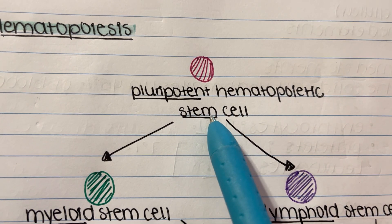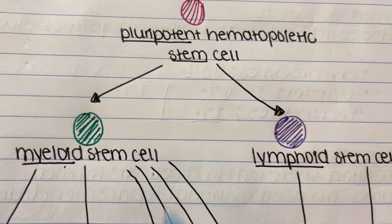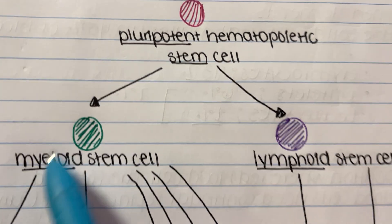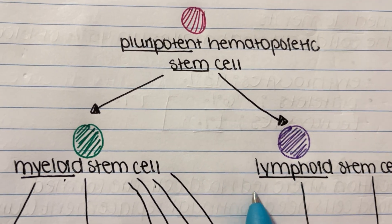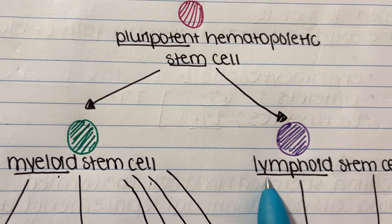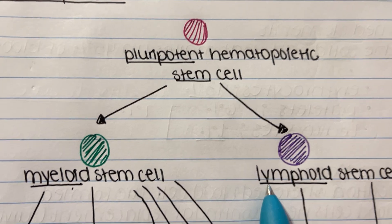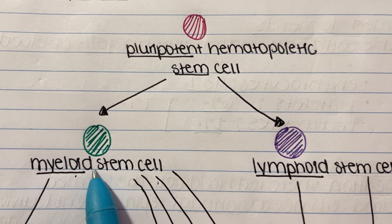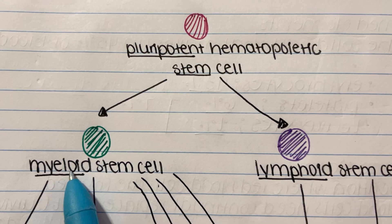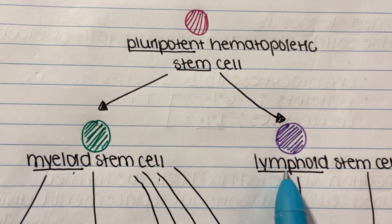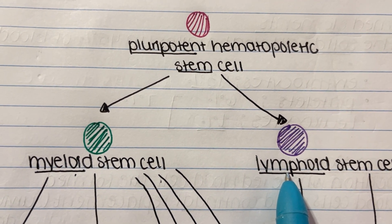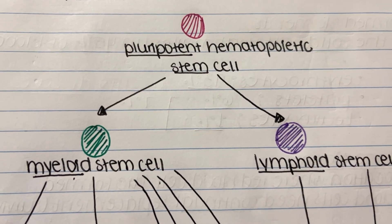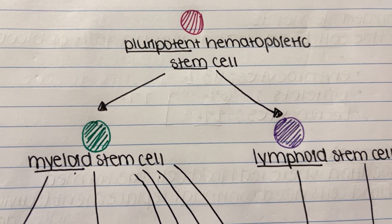From this stem cell, it can either go to a myeloid stem cell or a lymphoid stem cell.